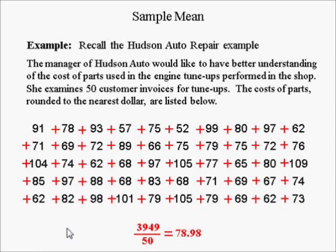The sample mean estimates the population, or true mean, which in most cases we won't know. The probability that the sample mean is exactly equal to the population mean is zero because the population mean is some unknown value. The sample mean, on the other hand, could theoretically be one of infinitely many values on the number line.